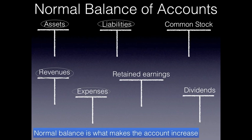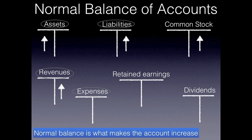Now let's look at the normal balances of accounts. The ones circled are not actual names of accounts — those are categories. The normal balance is what makes the account increase. Assets increase with debits, so debit is their normal balance. Liabilities increase with credits, so that's their normal balance. Common stock increases with credits — normal balance is a credit. Revenues increase with credits — normal balance is a credit. Expenses carry a debit balance. Retained earnings carry a credit balance. And dividends, as we just saw, increases with debits, so it carries a normal debit balance.